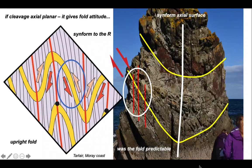The sinform lies to the right. If the cleavage is axial planar, it gives the attitude of the fold. We're dealing with an upright fold. That's our prediction. That's the outcrop demonstrating the viability of our prediction.